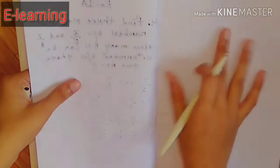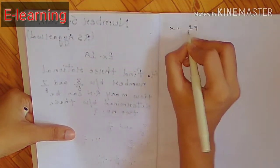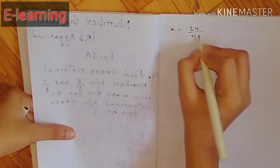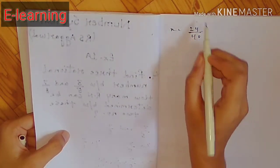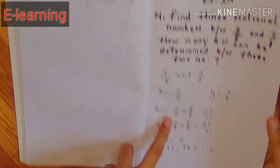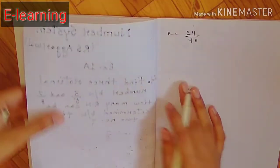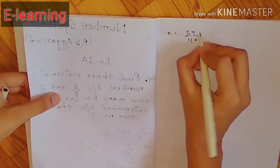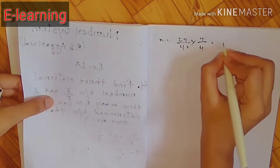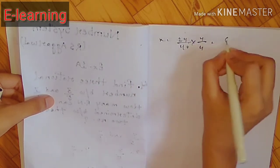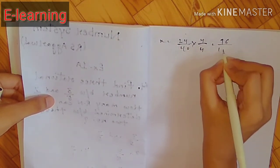x की value 24/40 है, जिसमें से हम n की value को numerator और denominator में into करेंगे। 24×4 = 96 और 40×4 = 160। तो x = 96/160 हो जाता है।